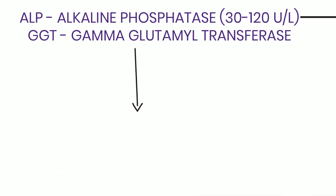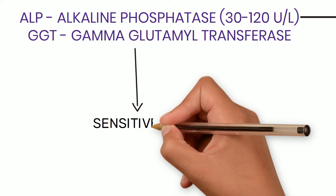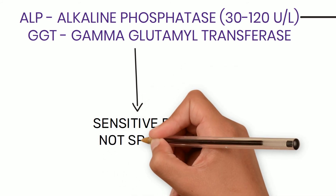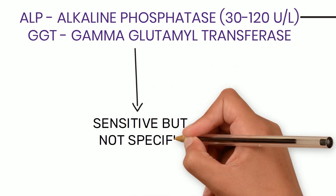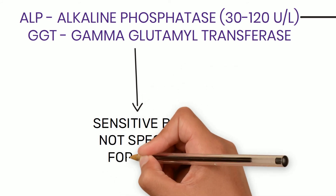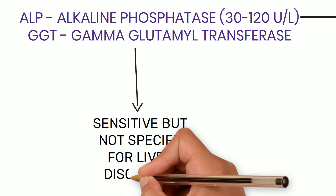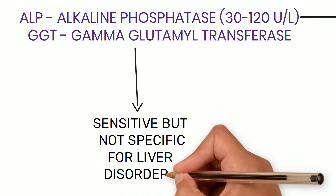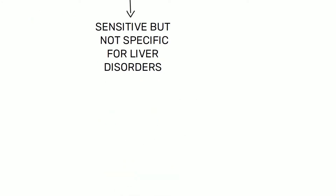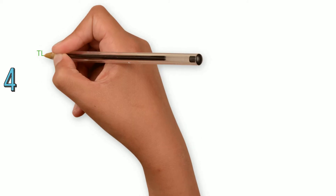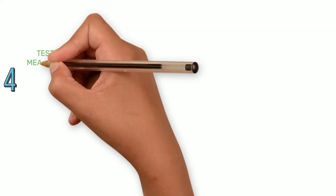GGT is sensitive but not specific to liver disorders. It is also elevated following some drug ingestion and in pancreatic disorders, but it is absent in bone.